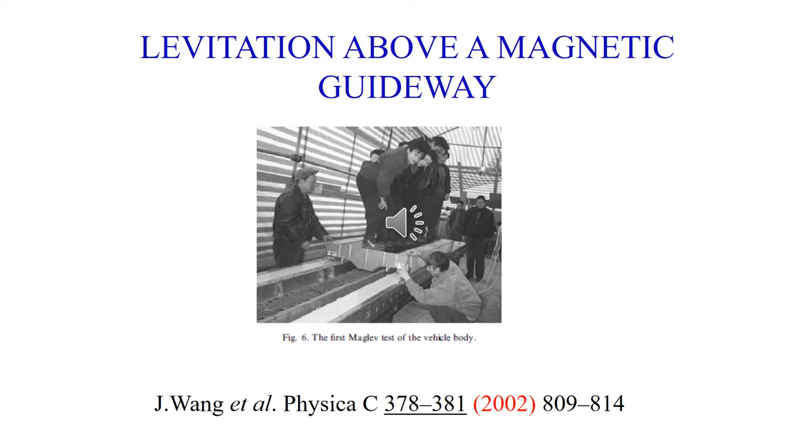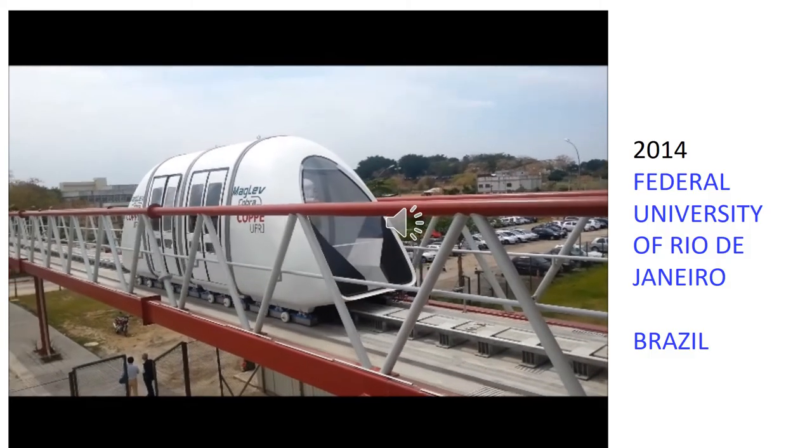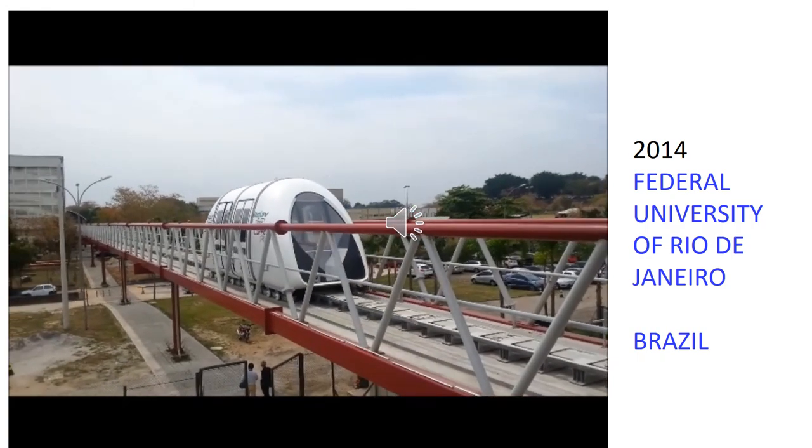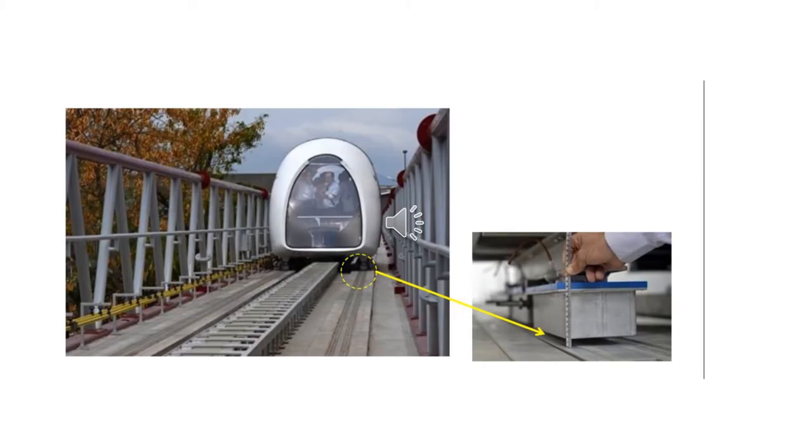The first SML demonstration was achieved at the Jiaotong University in China in 2002. The first vehicle prototype has been running on a demonstration track at the Federal University of Rio de Janeiro. The levitating system consists of superconductors and cryostats, and rails included magnets in the so-called Halbach configuration.